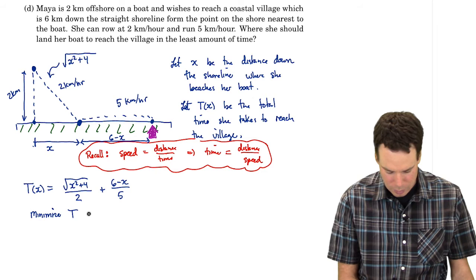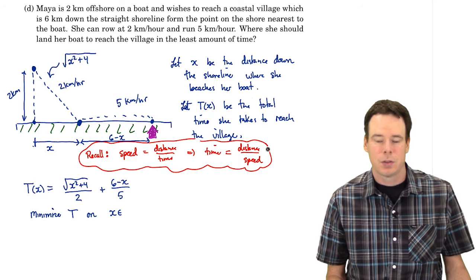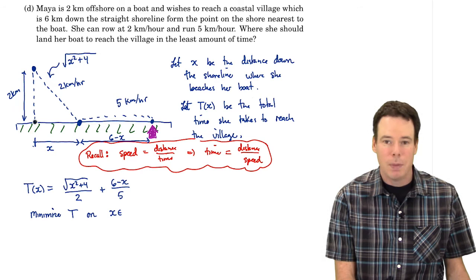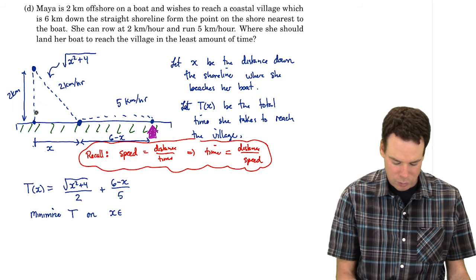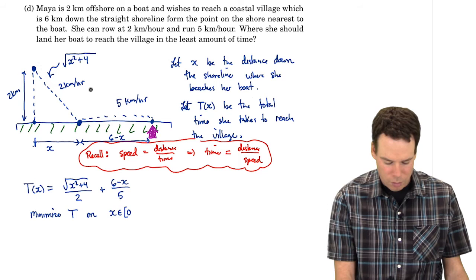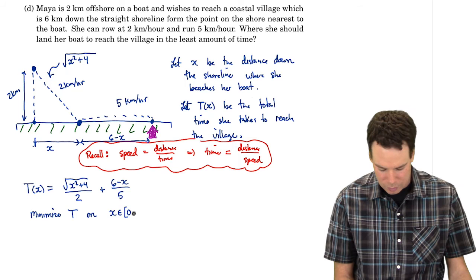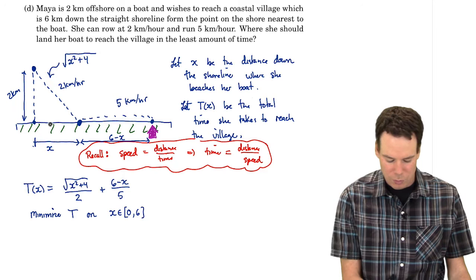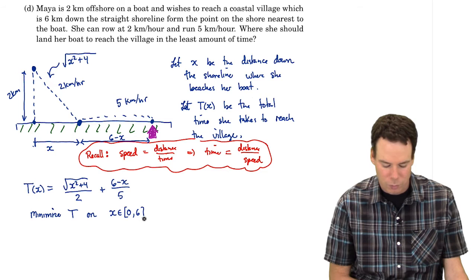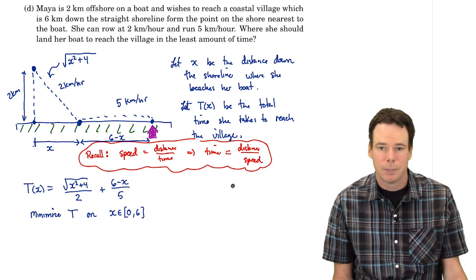Minimize T on the interval from what? Where is x ranging from? Well what are the extremes? She could head straight to the shoreline. Make no horizontal coverage along the shoreline by rowing. Just head straight there. So x is 0. And then run the full 6 kilometers. Or she could row all the way to the village. That means row the horizontal distance of 6 kilometers before she beaches the boat. Or she could stop along the beach anywhere in between. So x can range from 0 all the way to 6.